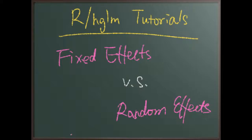In this video I will talk about something that is sometimes really confusing to people: how shall we decide whether to treat a variable as a fixed effect or random effect? This is a very tricky question to answer because there is basically no absolutely right answer to it. It usually depends on your situation and what kind of problem you are trying to solve and what kind of conclusion you are trying to draw from your analysis.